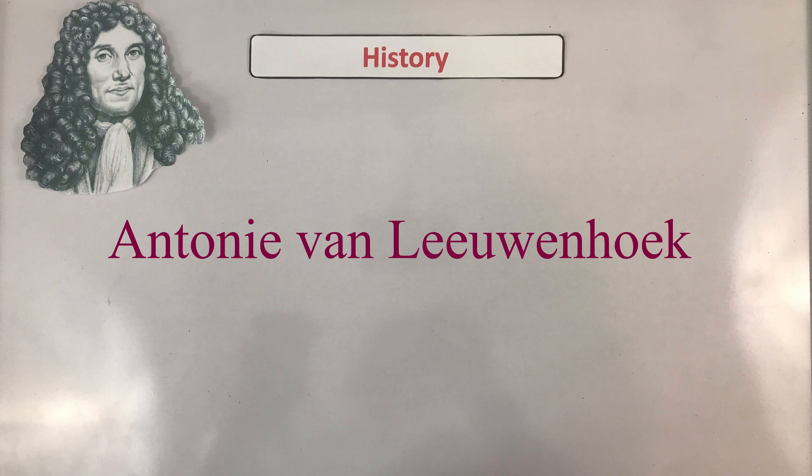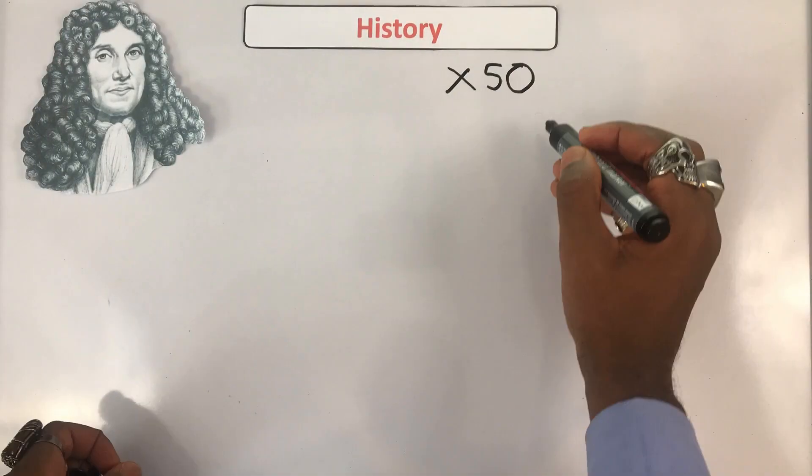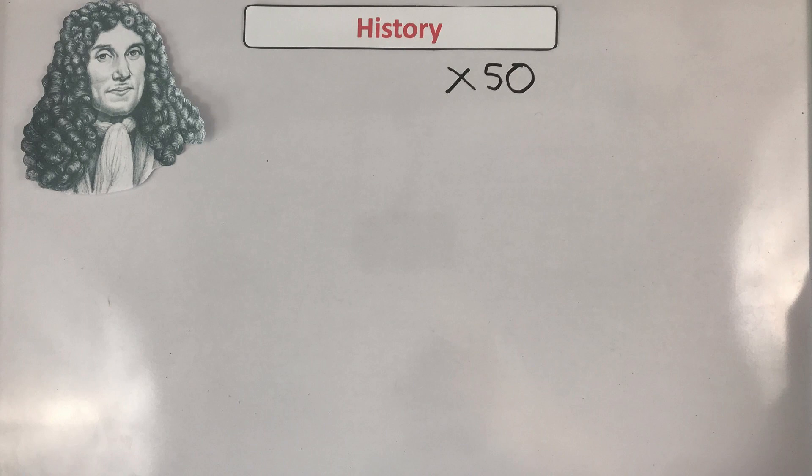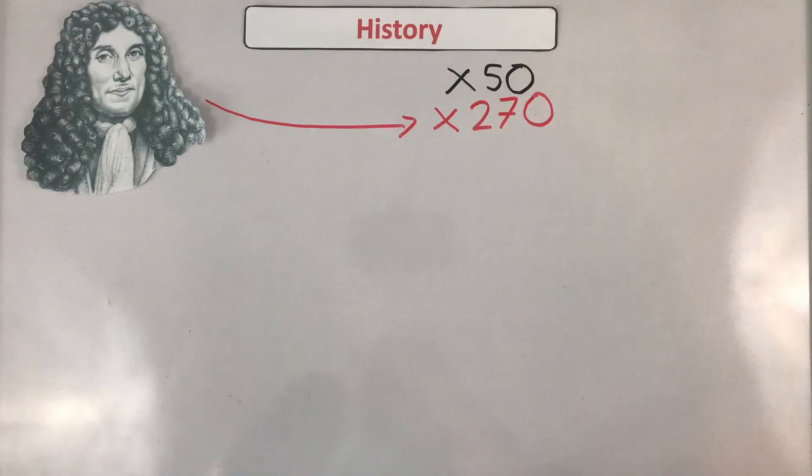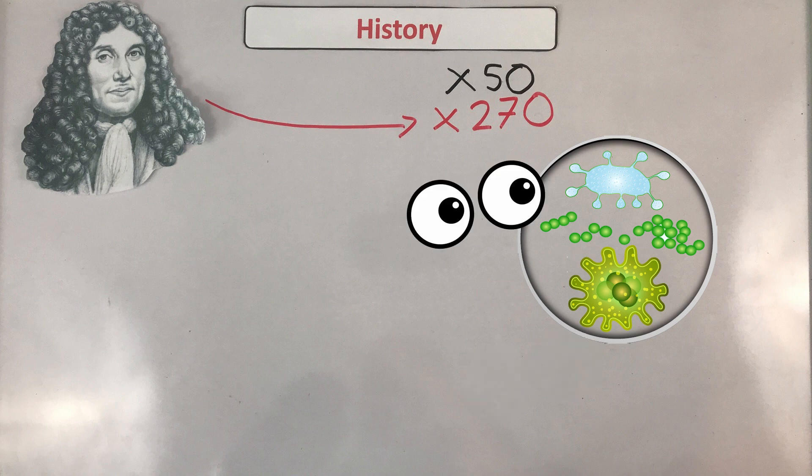His could magnify like 270 times so he was the first brother to see bacteria, sperm cells and all them other cells.